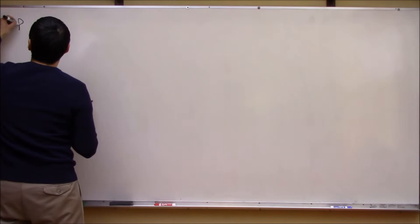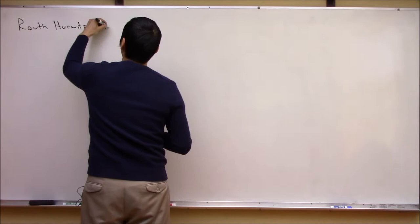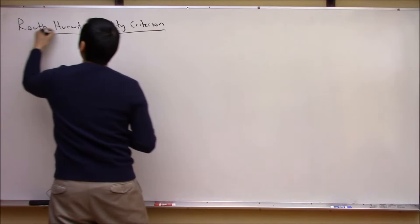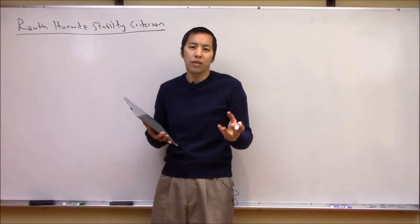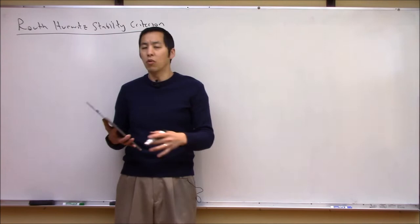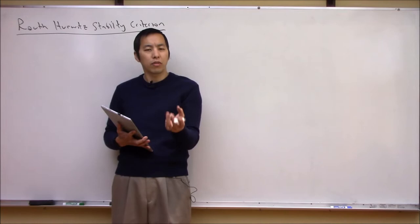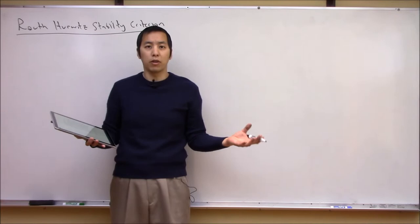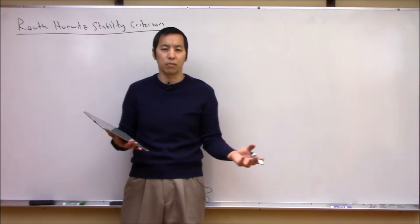Hello everyone and welcome to another video. Today I'd like to talk about the Routh-Hurwitz Stability Criterion. This is an interesting mathematical procedure that allows us to assess if any roots of a given linear polynomial are in the right-half plane. This has obvious applications in control systems engineering because the characteristic equation for all linear time-invariant systems are linear polynomials, and their roots determine the stability, performance, and characteristics of the system.